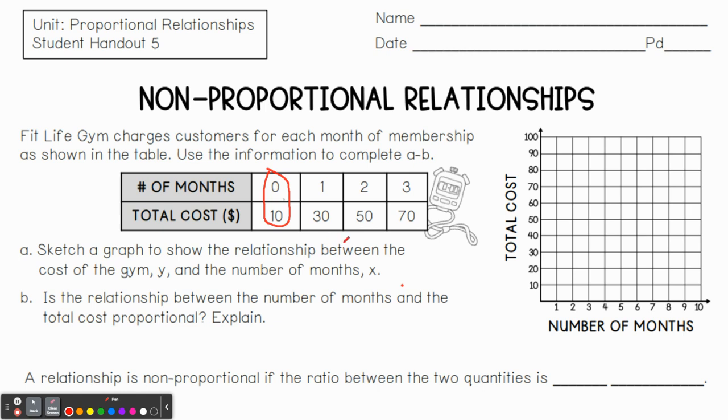So we have at zero months, we have $10. Let's draw a dot there. At one month, we have $30. Let's draw a dot there. Two months, we have $50. Three months, we have $70. And let's go ahead and draw that out. Connect those dots.